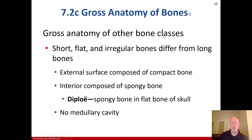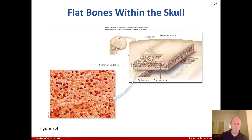The gross anatomy of short, flat, and irregular bones differs from long bones. Their external surface is composed of compact bone, and the interior is composed of spongy bone — also called diploë in flat bones of the skull. There is no medullary cavity. Looking at the flat bones of the skull, we can see the periosteum, compact bone underneath, and spongy bone below that.